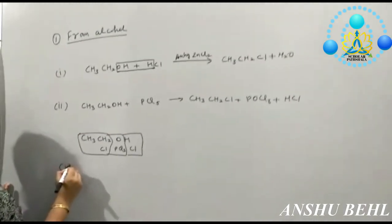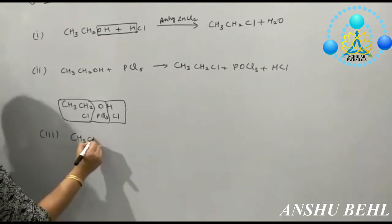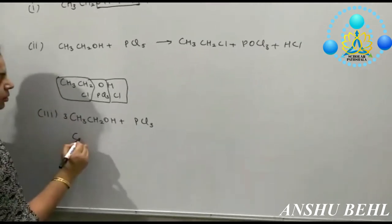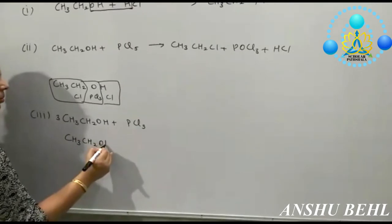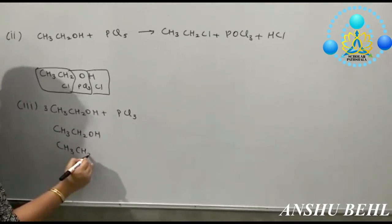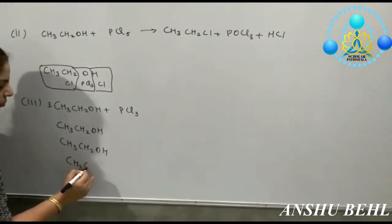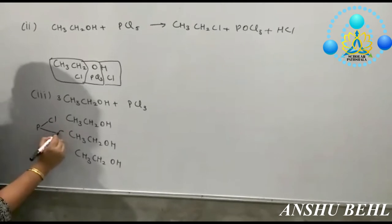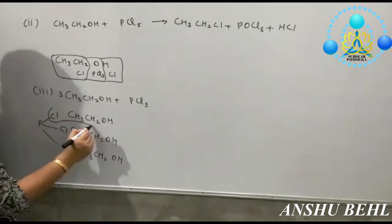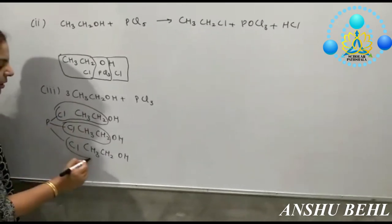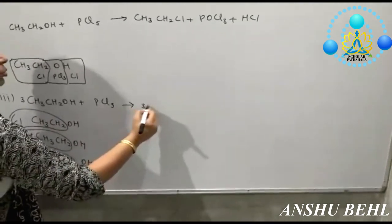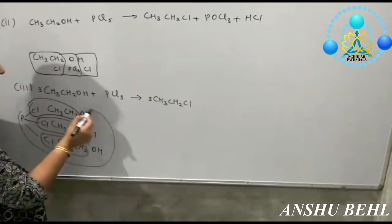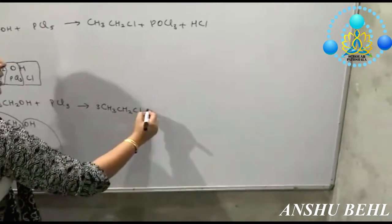The third reaction is to take ethanol and react it with PCl3. In this reaction we need 3 molecules of ethanol. The products are 3 molecules of ethyl chloride (CH3CH2Cl), along with 1 P and 3 OH which combine to form H3PO3.